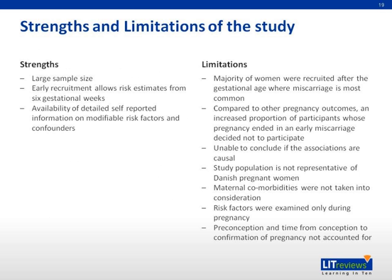Here are some of the strengths and limitations of this study. Strengths include a large sample size, early recruitment allowing risk estimates from six gestational weeks, and availability of detailed self-reported information on modifiable risk factors and confounders. Limitations include that the majority of women were recruited after the gestational age where miscarriage is most common; an increased proportion of participants whose pregnancies ended in early miscarriage decided not to participate; inability to conclude whether associations are causal; the study population not being representative of all Danish pregnant women; maternal comorbidities not being taken into consideration; and risk factors being examined only during pregnancy, without accounting for preconception period or time from conception to confirmation of pregnancy.